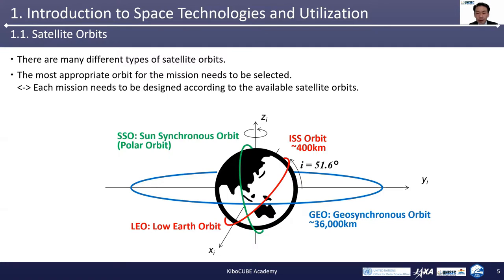The green one is the sun-synchronous orbit, also known as SSO. An SSO is a kind of polar orbit and flies over the North and South Pole regions. Together with the effect of the Earth's rotation, satellites in SSO have a chance to fly over most of the places on the Earth. Moreover, the sun's direction relative to the sun-synchronous orbit, SSO, is constant throughout the year. So you have the same illumination condition on the observing Earth's surface. Therefore, this orbit is suitable for Earth observation.